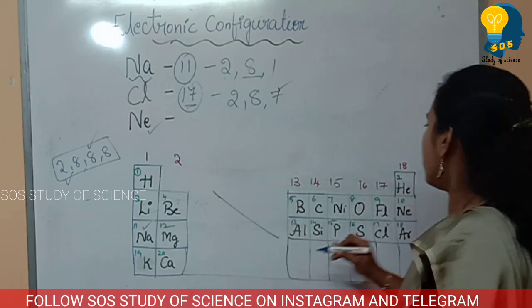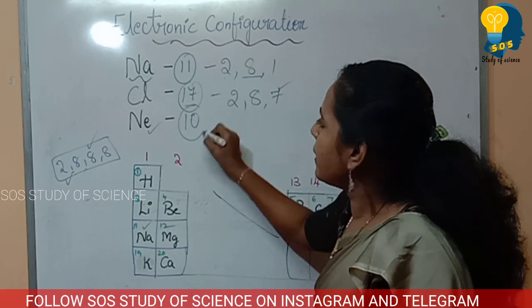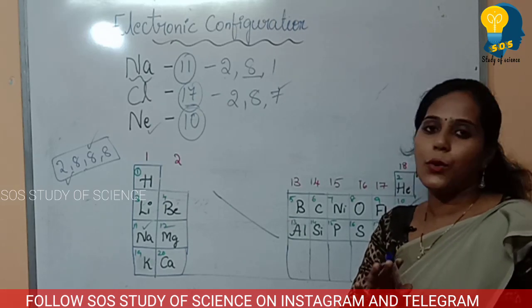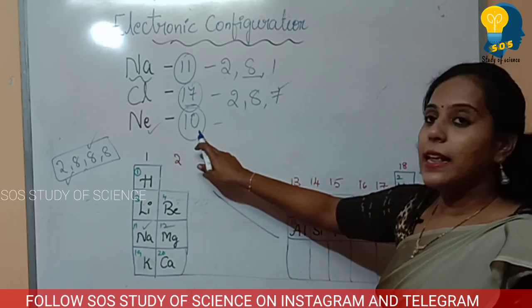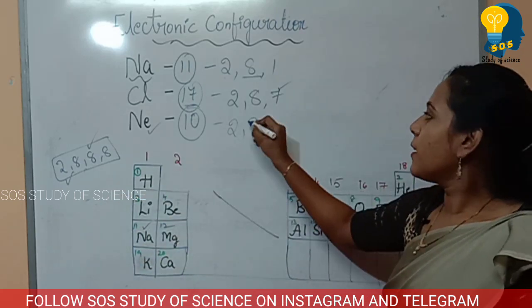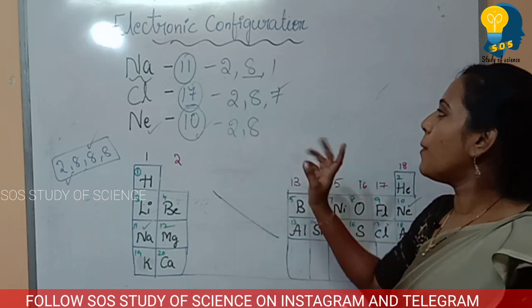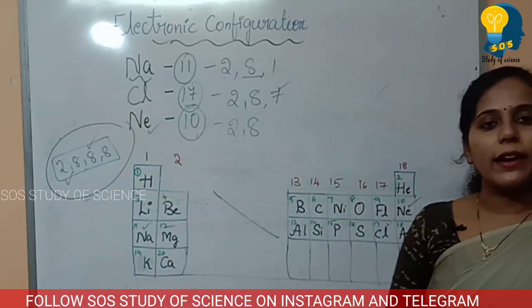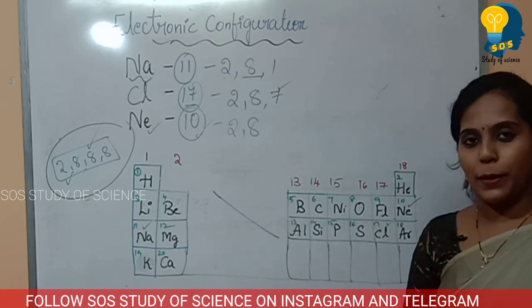Next, neon. Neon is the 10th element, so its atomic number is 10. First shell: 2. Second shell: 8. 2 plus 8 equals 10. So the electronic configuration of neon is 2, 8.